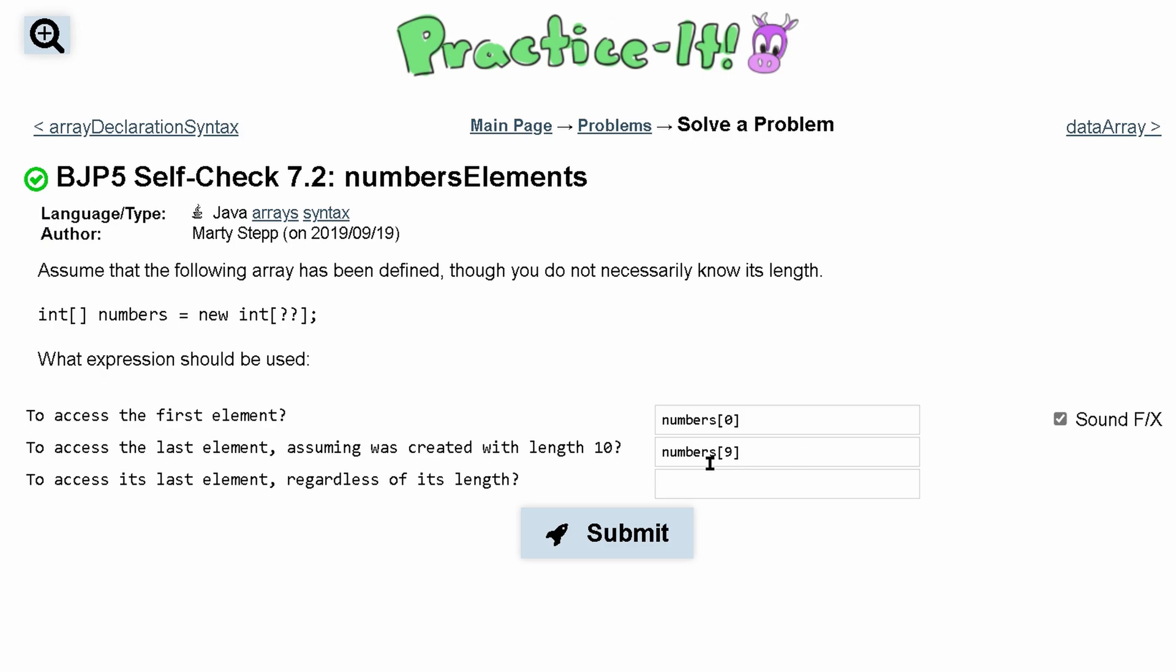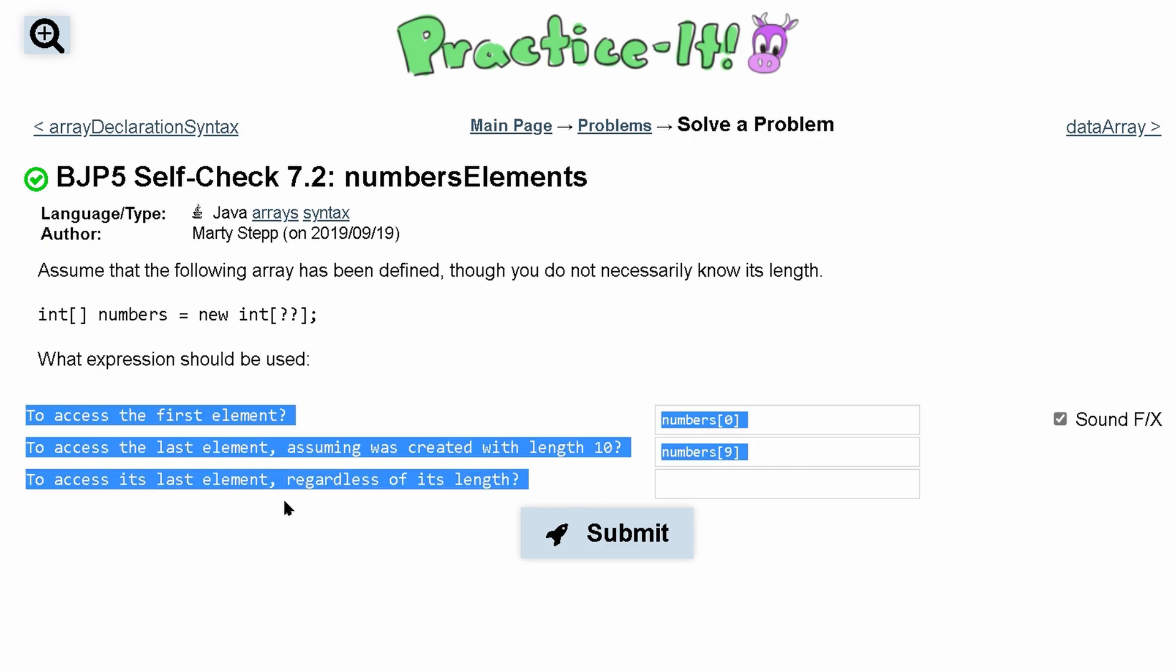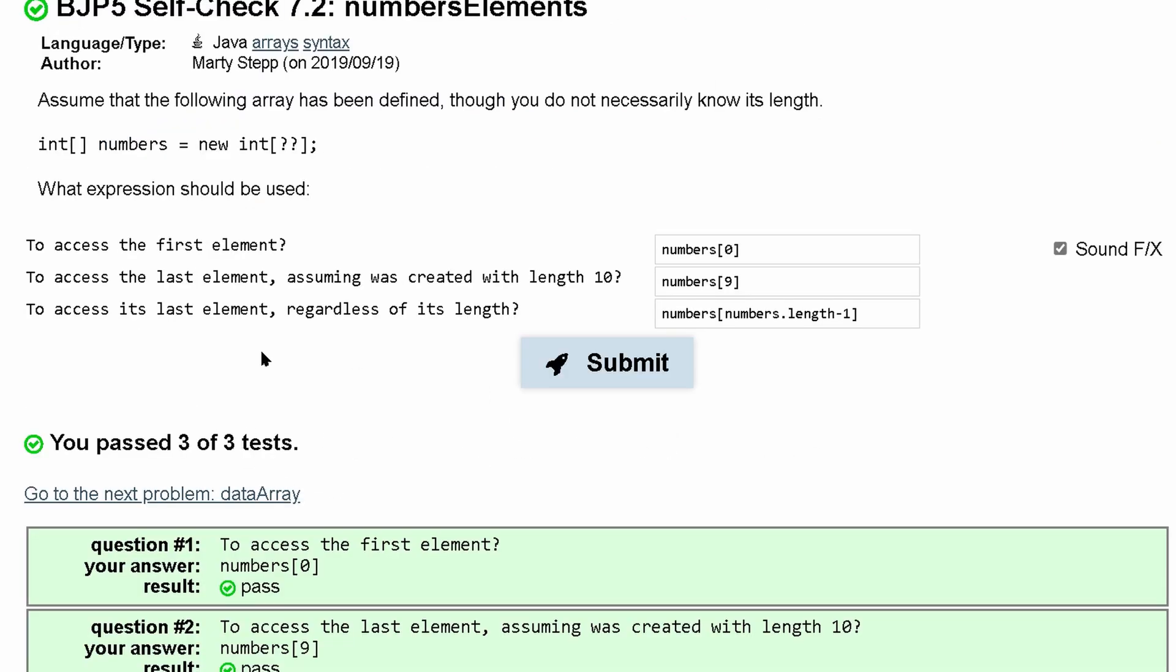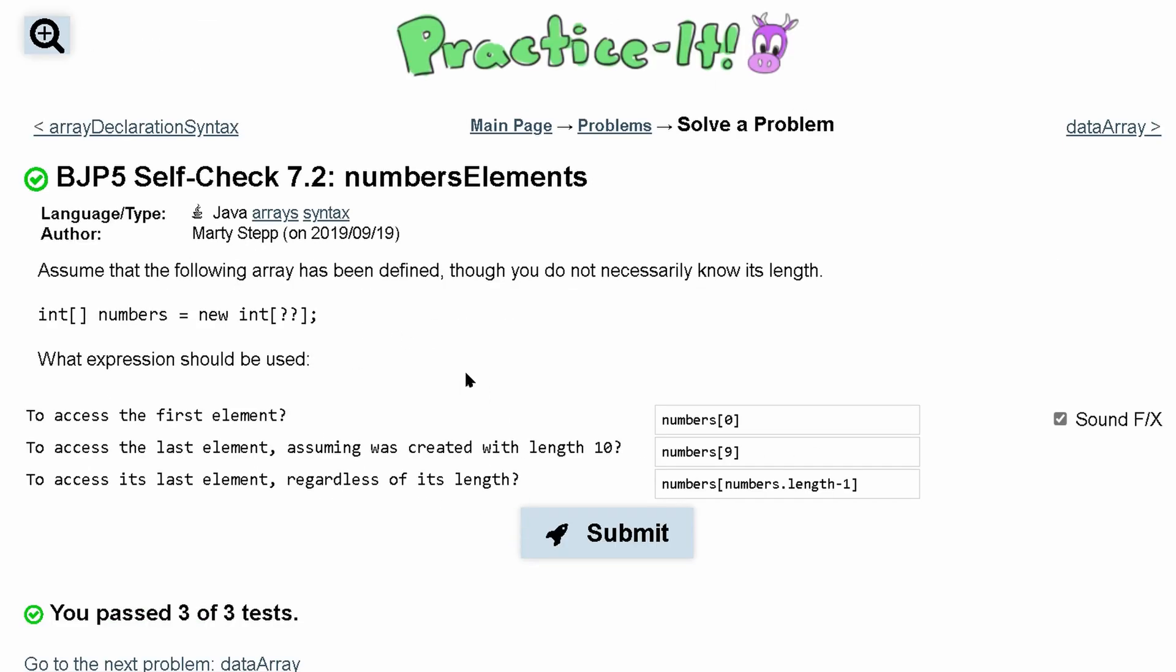To access its last element regardless of length, what do we do? Well it's going to be similar to this. We can have numbers, we don't know this length though, so we're going to have to rely on getting the array length minus 1. That's why I just said what I just said. So we'll do numbers which is the array, dot length so we get that length, and then we subtract one from it. So we can click submit and we've passed three out of three tests. That's how I would look at